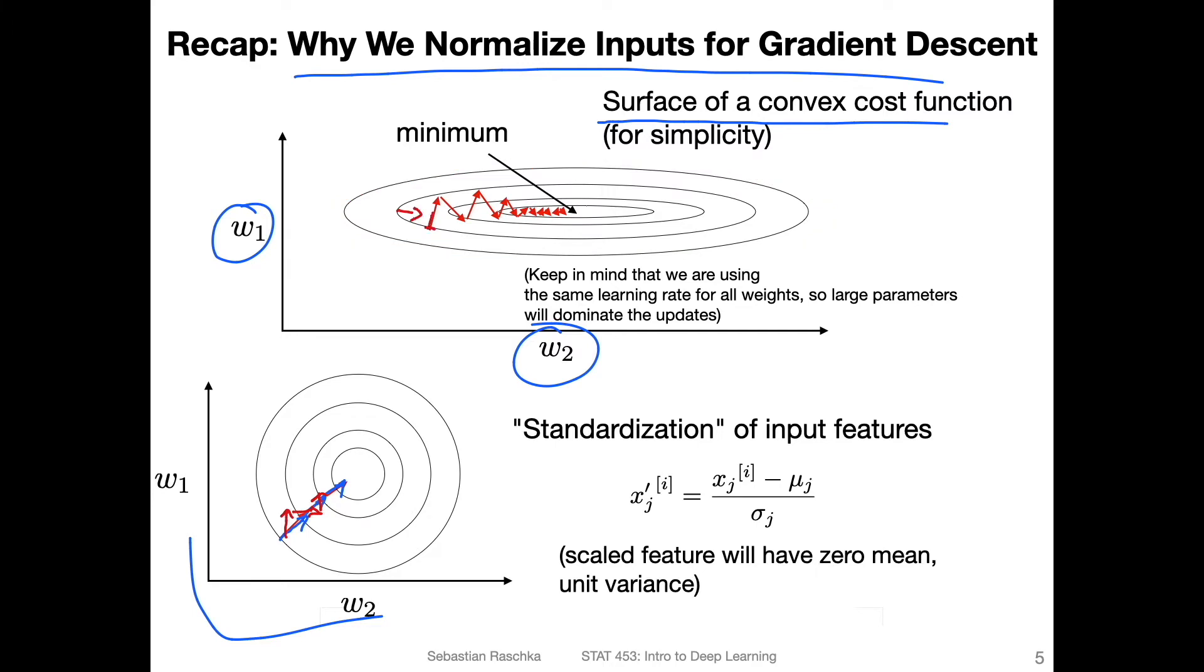but instead of stopping here and then taking this step here, we overshoot and then we go this zigzagging. And then also, if we have stochastic gradient descent, this is even more exaggerated.